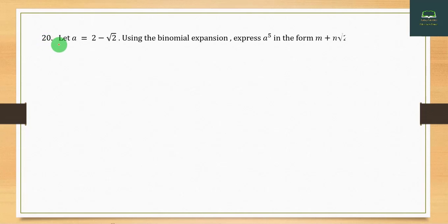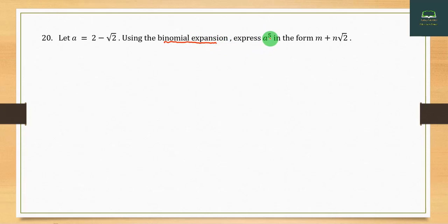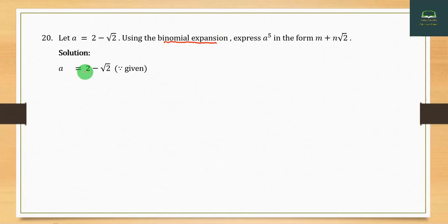Question number 28 is equal to 2 minus root 2. Using the binomial expansion to find the value of x in the form n plus n√2. This is the binomial expansion of the value of x, giving x in the form of n plus n root 2. You should have approximately 2.25.